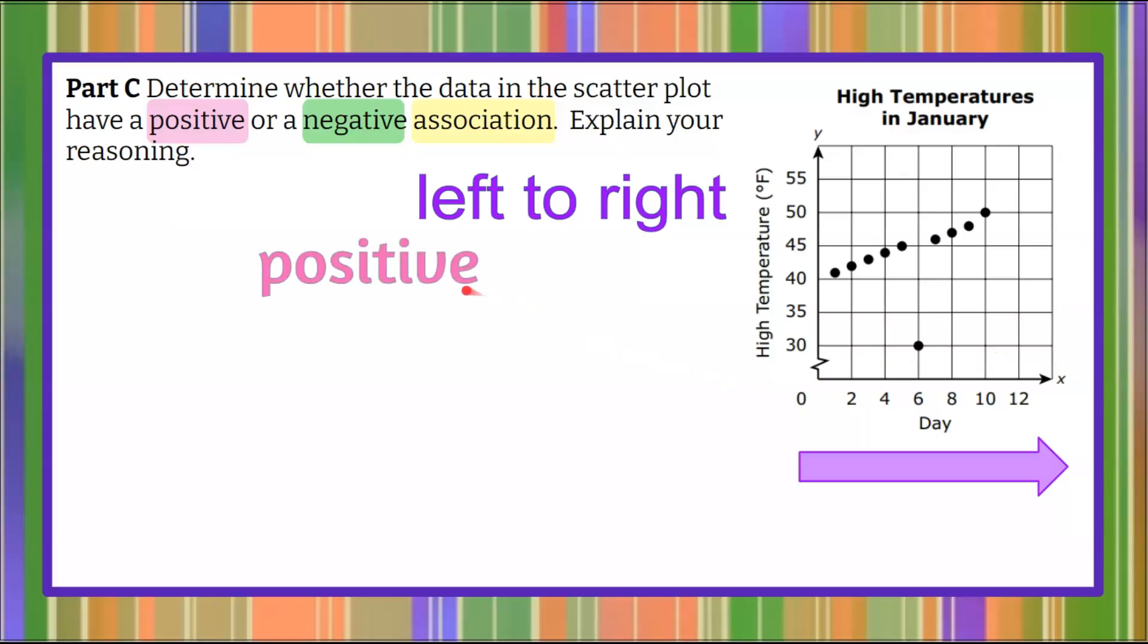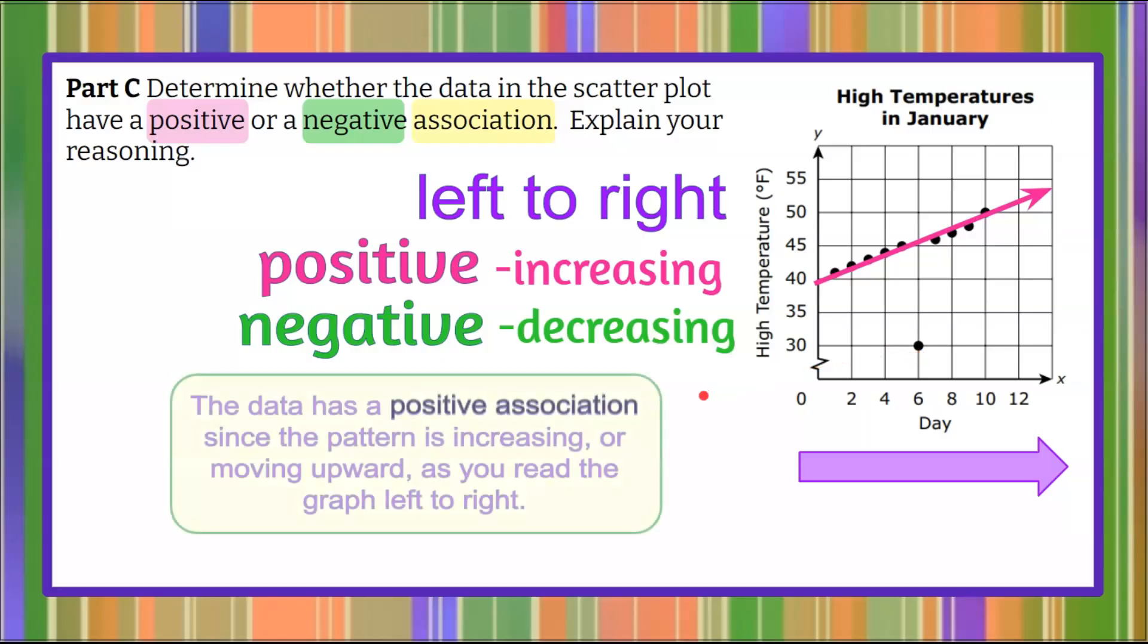So we're looking to see it will have a positive association if we're increasing from left to right, and it will have a negative association if we're decreasing as we read left to right. So if we look at our graph and we start left and we go right, we can see that if we drew a line in there, we will see that it is increasing left to right, with the exception of our outlier. So to conclude and explain our reasoning, the data here has a positive association since the pattern is increasing or moving upward as you read the graph left to right.